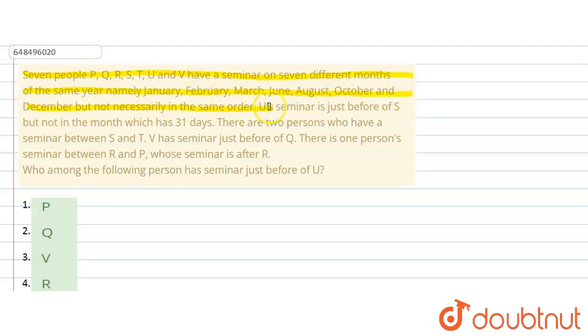But not in the same order. U's seminar is just before S, but not in a month which has 31 days. There are 2 persons who have seminar between S and T. V has seminar just before Q. There is 1 person's seminar between R and P. P whose seminar is after R. Who among the following person has seminar just before U?